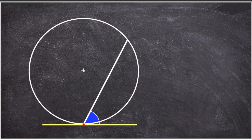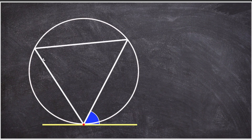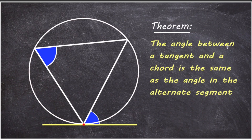Now, in the other segment, an angle is created by drawing a line from each end of the chord to the same point on the circumference. According to the alternate segment theorem, the angle between a tangent and a chord is the same as the angle in the alternate segment. These two angles are the same.